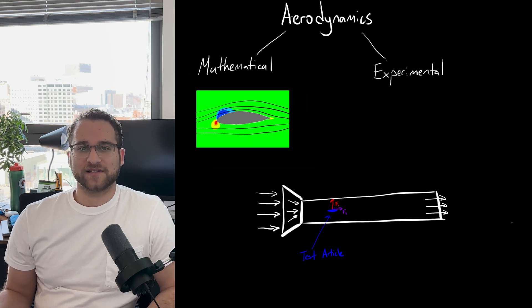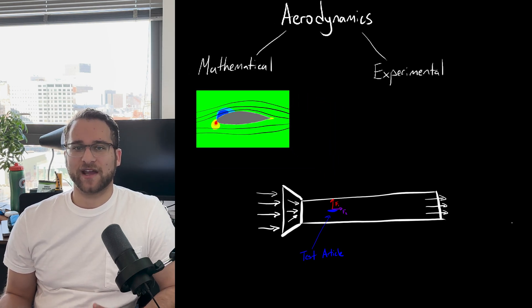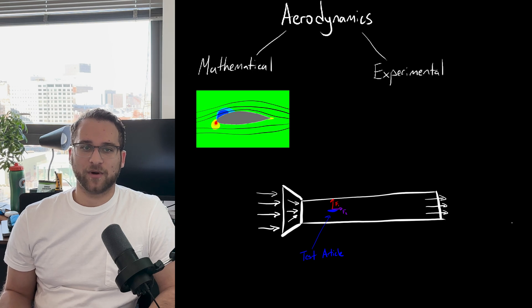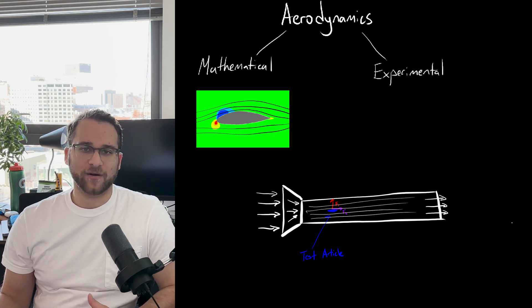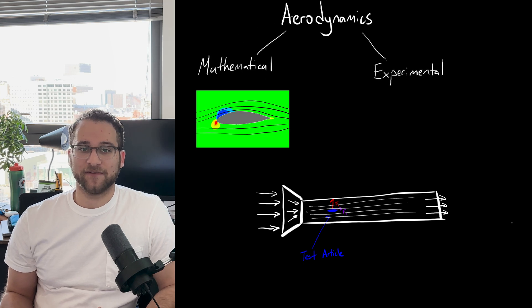On the other hand, experimental testing is commonly done in wind tunnels with scaled down versions of the design, where forces can actually be measured on the body. Sometimes water vapor or smoke is used to be able to visualize the movement of the airflow around these scaled models.